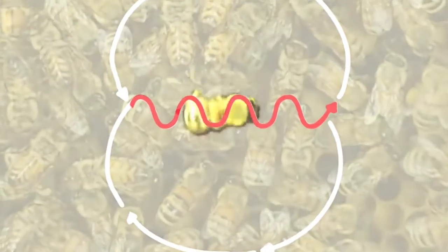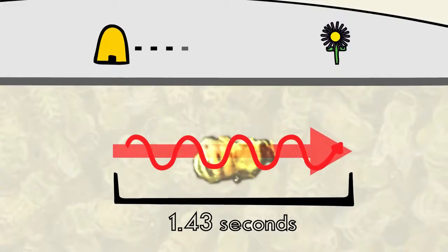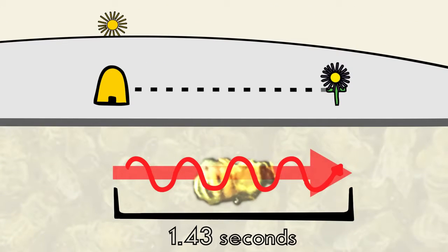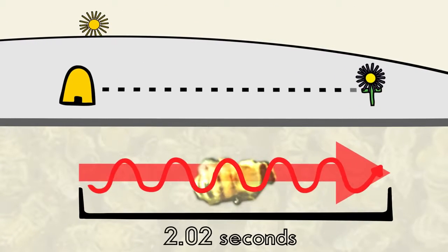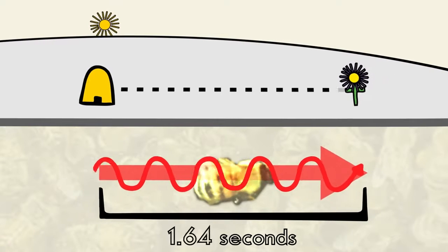The central waggle section of the bee's dance also contains information about the distance to a food source. Longer times spent in this part of the dance means that the food is further away. Shorter durations mean that the food is closer by.